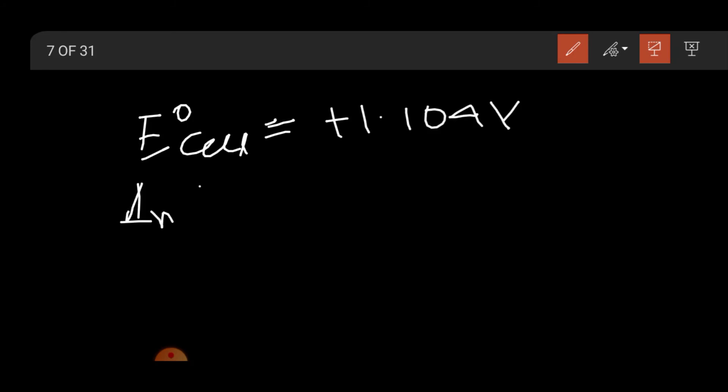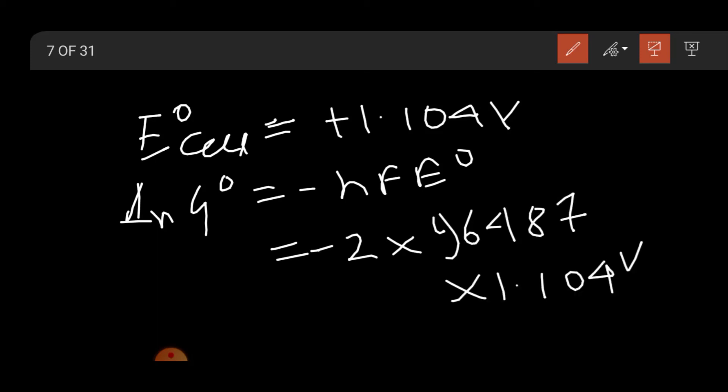So Δr G⁰ will be minus nFE⁰. Here involved electrons, number of electrons is 2 into 96487 into 1.104 volt. Here coulomb, here we calculate.